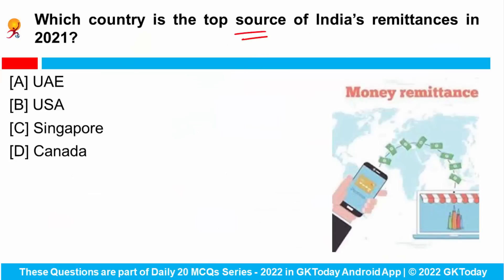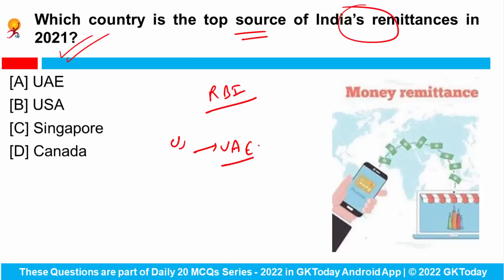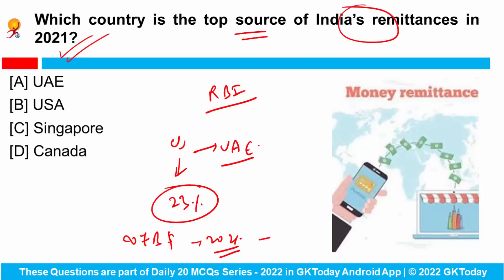Which country is the top source of India's remittances in 2021? According to a Reserve Bank of India survey, the USA has surpassed the UAE and has now become the top source country for India's remittances, accounting for 23% overall. India is the world's biggest recipient of remittances, having received $87 billion in 2021, representing 4.6% growth compared to the previous year. The share from the Gulf Cooperation Council countries has decreased.